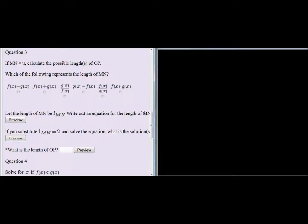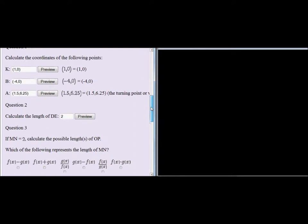Question 3 is quite a difficult problem, but if we go through it, you might understand it quite well. If MN is equal to 2, and let's see what is MN - MN is this distance. If that distance is equal to 2, calculate the possible lengths of OP.